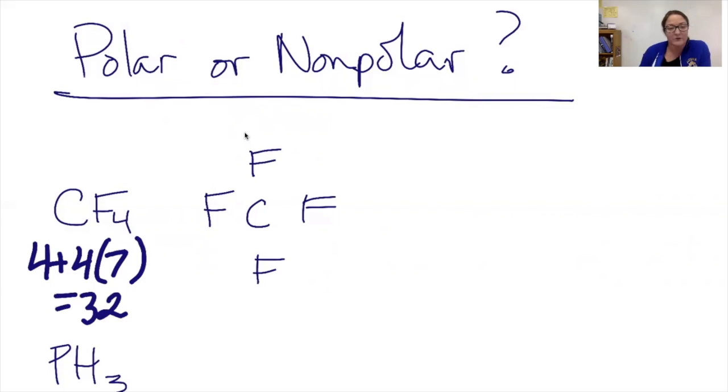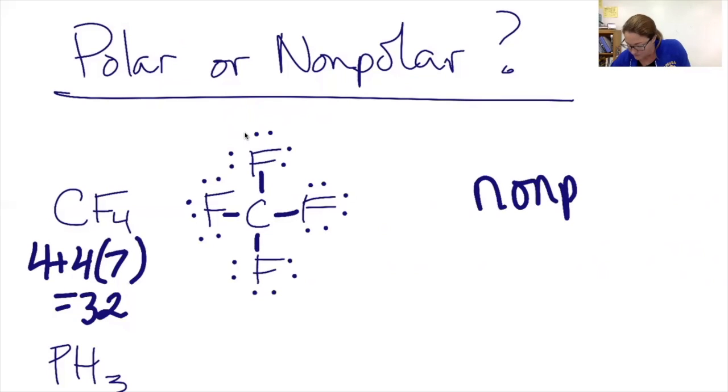This will give me a grand total of 32 electrons to assign. I'm going to count them out as I draw the structure. That structure is finished. Now I'm going to check the two things. Are there lone pairs on the central atom? No. Are all of the outside elements the same? They are. Therefore, this structure is going to have symmetry and it's going to be a nonpolar molecule.